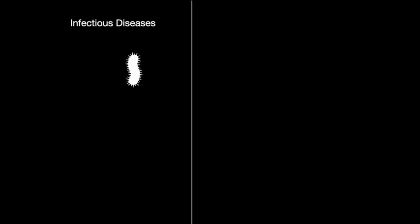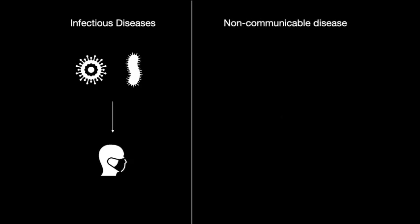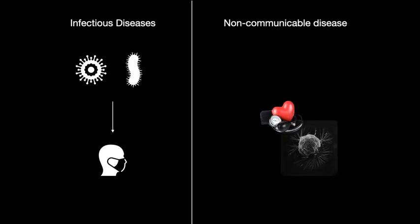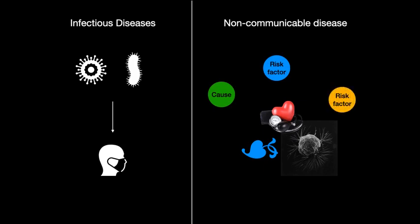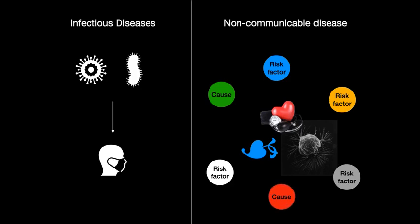Diseases in general fall into one of two broad categories. Infectious diseases like COVID, tuberculosis, and pneumonia usually have a single direct straightforward cause. On the other hand, we have chronic diseases like heart diseases, cancers, hypertension, diabetes, etc. And these diseases have multiple risk factors and in some cases multiple causations.